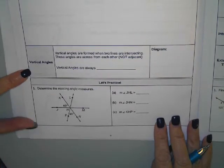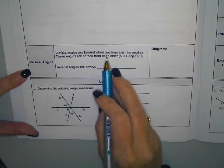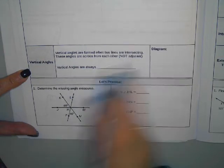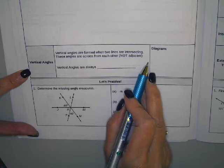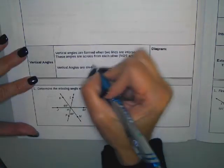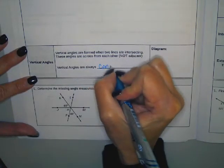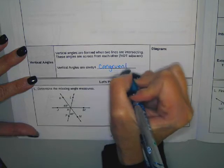So the first set of notes is at the bottom of page 8. It's the definition of vertical angles. Vertical angles are formed when two lines are intersecting. These angles are across from each other. They are not adjacent. Vertical angles are always congruent.